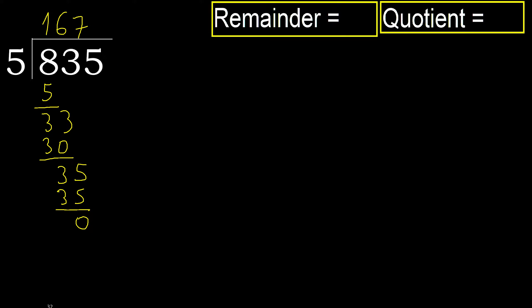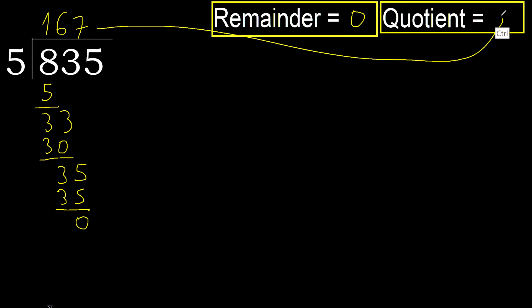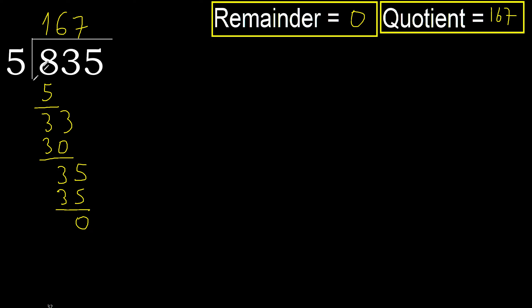There is no next number, therefore finish it. 835 divided by 5 is 167, ok.